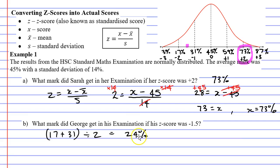So I'll now show you how to do it using the formula. z equals x minus x-bar over s. Remembering that we're trying to find x, representing the mark that George got. We know z, the z-score, which is negative 1.5. We don't know x. We do know x-bar, the mean or average is 45. So x minus 45. And at the bottom of our fraction, our standard deviation, s, is 14%.